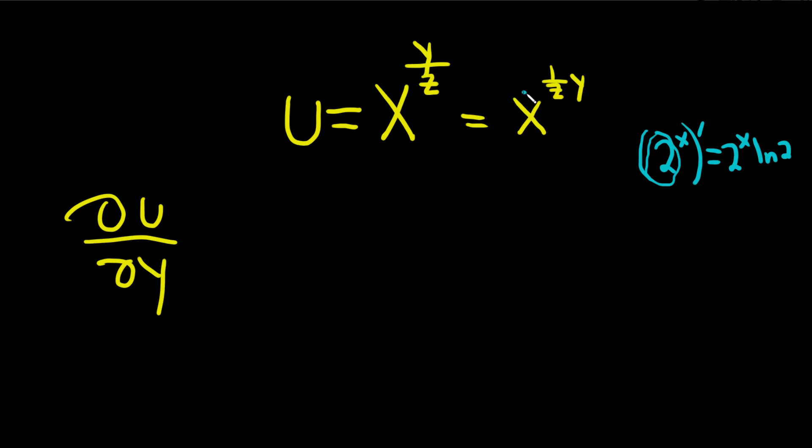And that's exactly what we have here, right? We have a constant, just like 2, except it's x. So when we take this derivative, we have a constant to a variable power. So we use this rule.